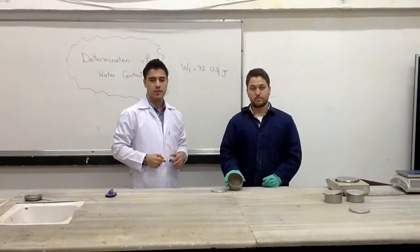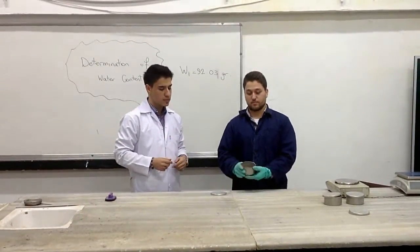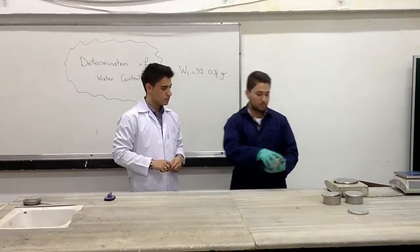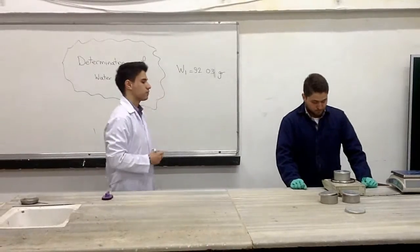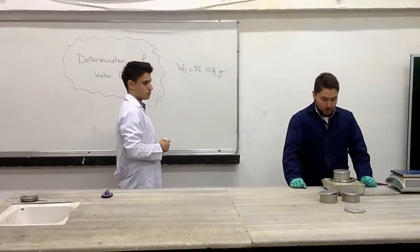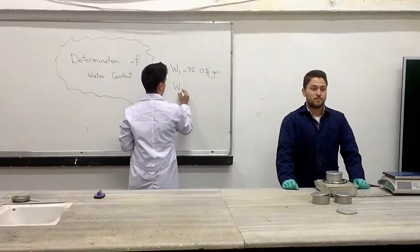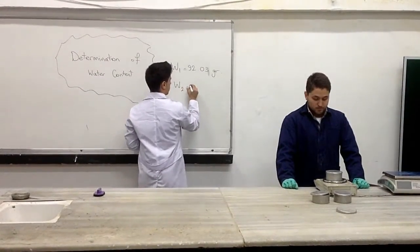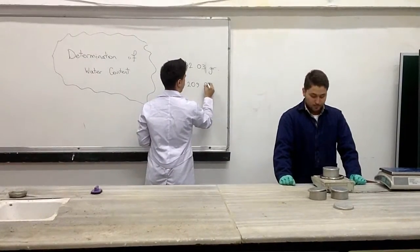The next step is to place a moist sample inside the moisture can and determine its mass with its cap. It is 209.85 grams. So our second weight will be 209.85 grams.